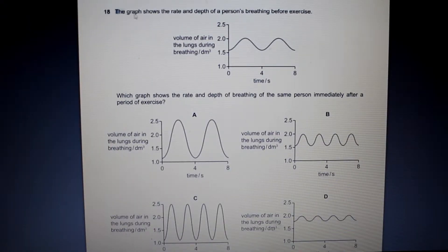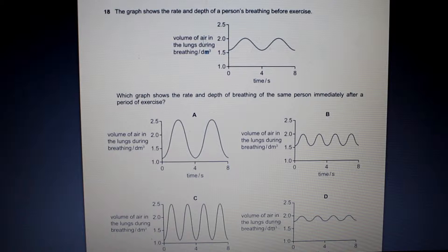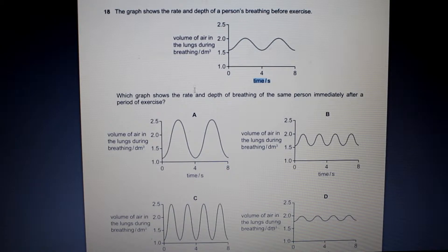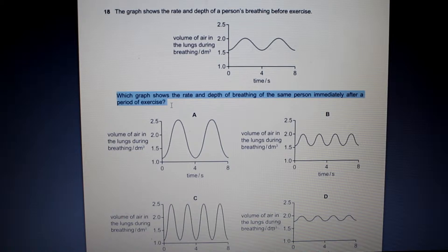Alright, let's jump into some past papers. Here we see question 18. The graph shows the rate and depth of a person's breathing before exercise — we see the volume of air in the lungs during breathing on the y-axis and time in seconds on the x-axis. We can see that one breath was taken every four seconds. Which graph shows the rate and depth of breathing of the same person immediately after a period of exercise?